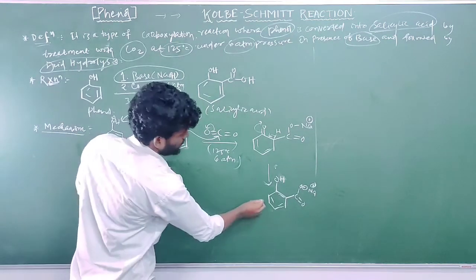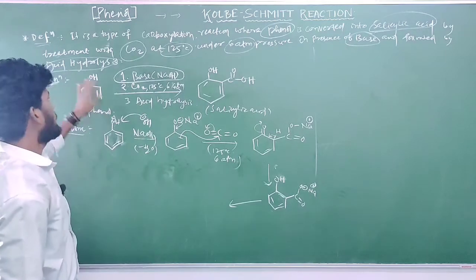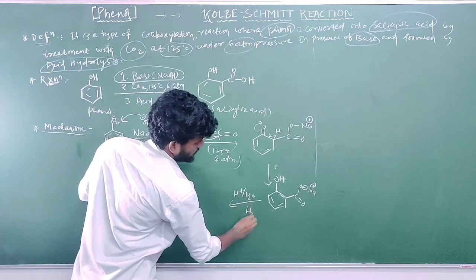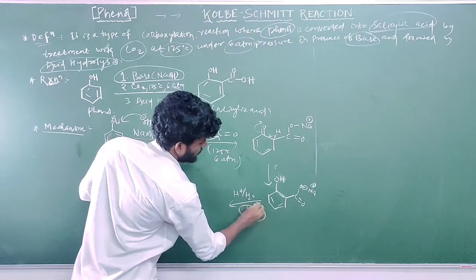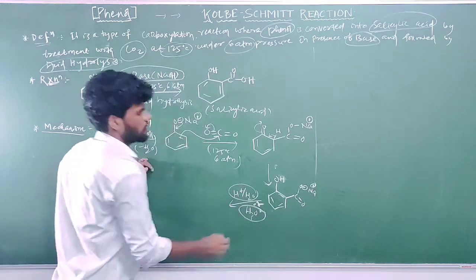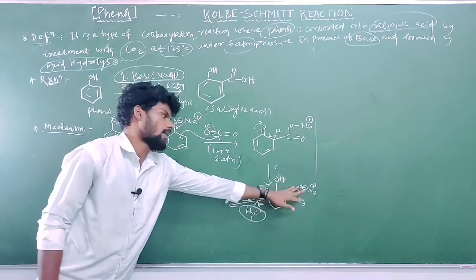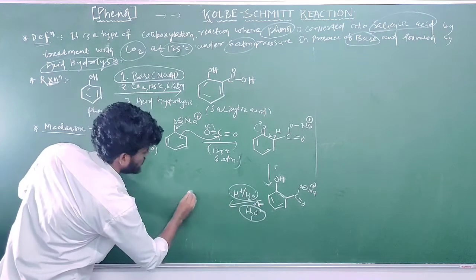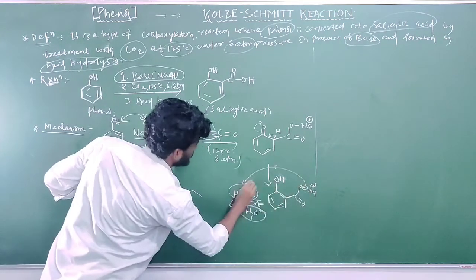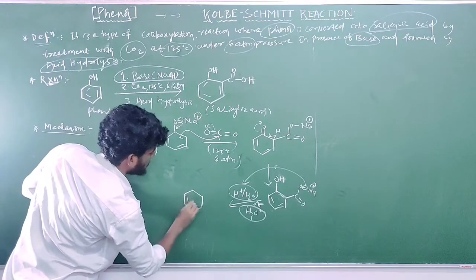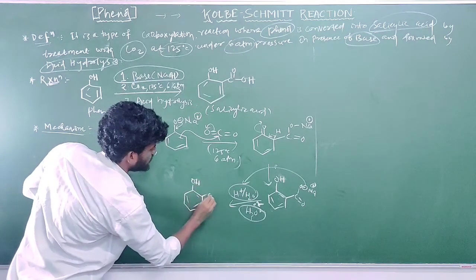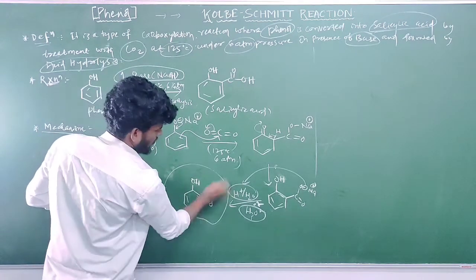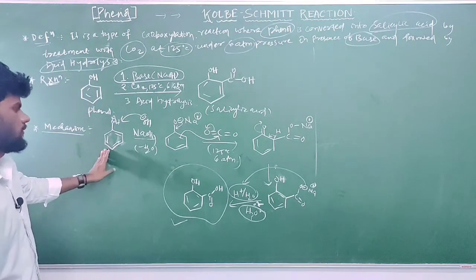In the next step, acid hydrolysis is performed using H+ water or H3O+. The O minus takes the hydrogen in the protonation step, forming OH. Combined with the C=O and OH groups on the ring, this gives salicylic acid as the final product.